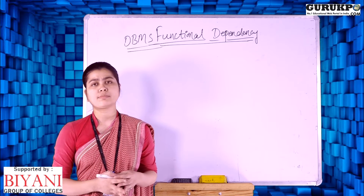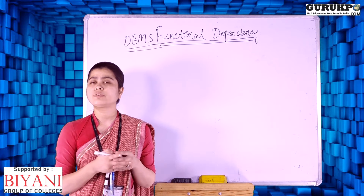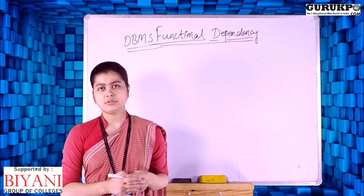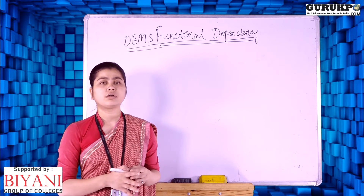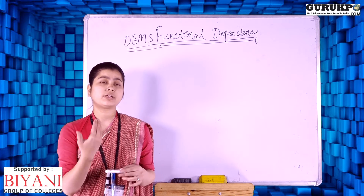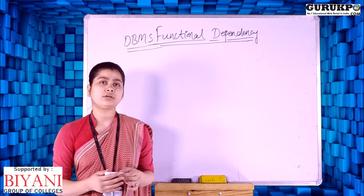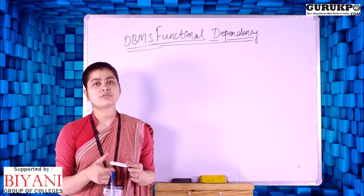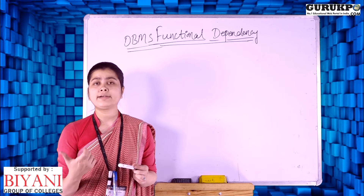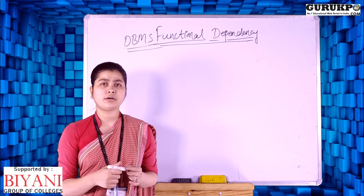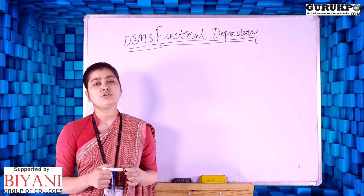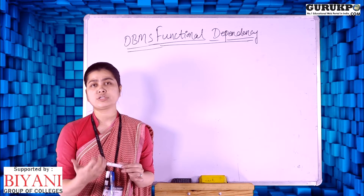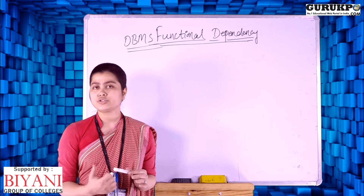First of all, we will discuss what is functional dependency. The attributes of a table depend on or functionally depend on each other, such that each attribute uniquely identifies the values of another attribute. So here we can say that attributes are functionally dependent on each other.